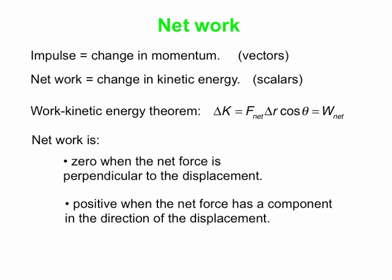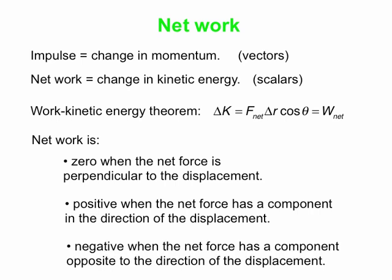Your net work comes out as a positive quantity — meaning your kinetic energy is increasing, you're gaining kinetic energy — when the net force has a component in the direction of the displacement. If your force is parallel to the velocity or has a component in that direction, the object is going to speed up. Similarly, if the net force has a component opposite to the direction of the displacement — which also means opposite to the velocity — then you're going to slow the object down, and that's consistent with a negative change in kinetic energy.